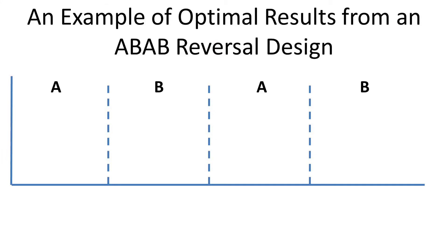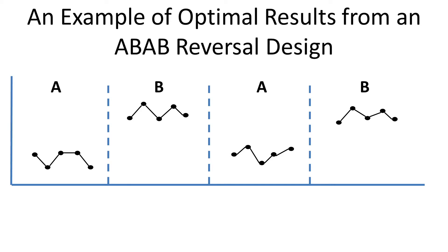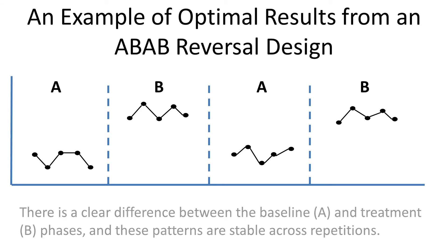Here's an example of what a convincing ABA design looks like. During the baselines, the participant's performance is lower than during the treatments. The A phases are consistent and the B phases are consistent, so the changes in the data seem clearly due to which phase the participant is in — not some extraneous variable. There are no confounds that could easily explain what's going on.